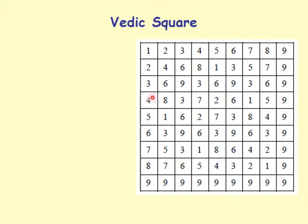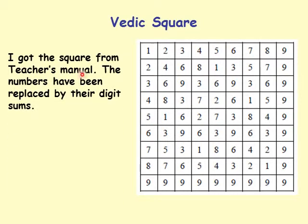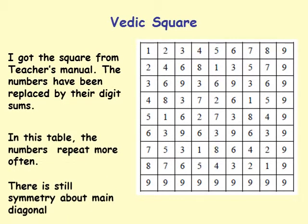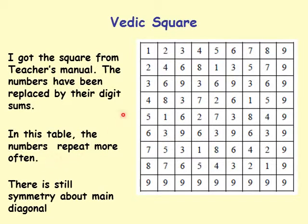The Vedic square is obtained by replacing every entry in the multiplication table with its digit sum. In this table, numbers repeat more often — for instance, 1 now appears many times. The table still has symmetry about the main diagonal. For example, 9 appears here and here, 2 here and here, 6 here and here.